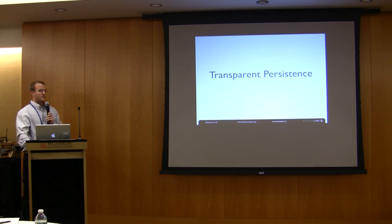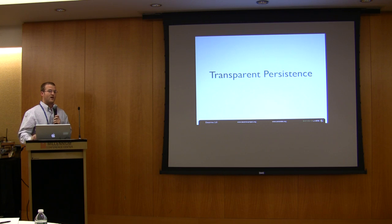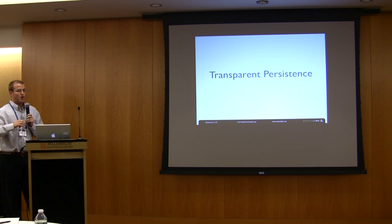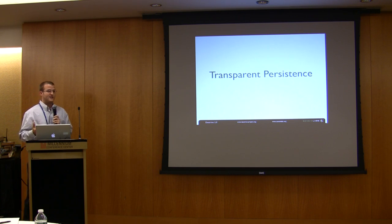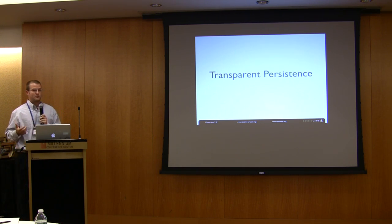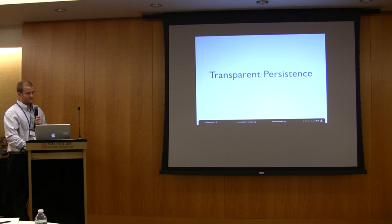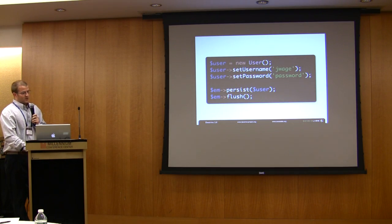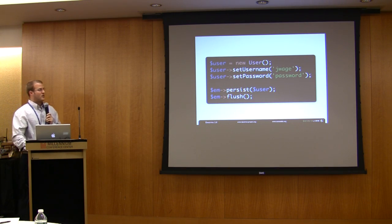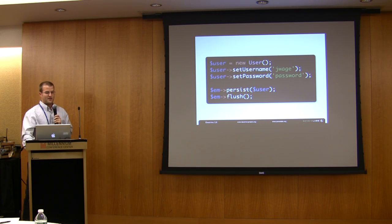So again I mentioned earlier transparent persistence. This is like the number one rule that we follow in Doctrine 2. Because we want the persistence of our entities to be completely transparent. And that means that no dependencies to our persistence layer should exist. It means that our entities should work without our persistence layer present. And if that is possible, that means that we can test our entities with PHPUnit without having to do any special mocking, because they're just regular PHP objects.